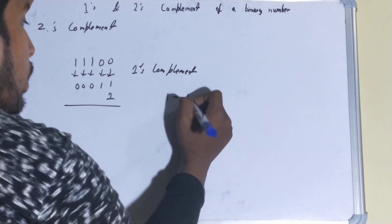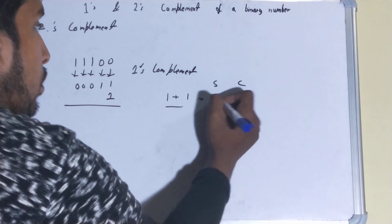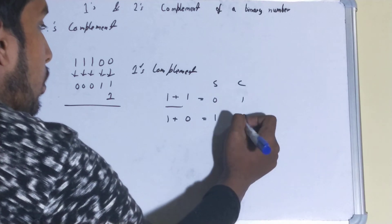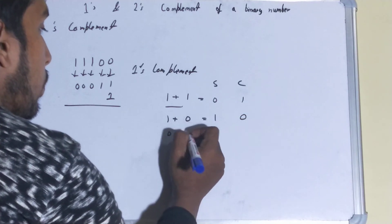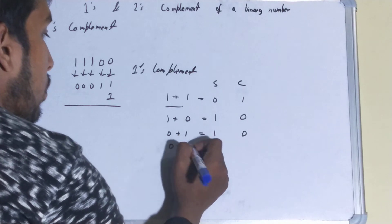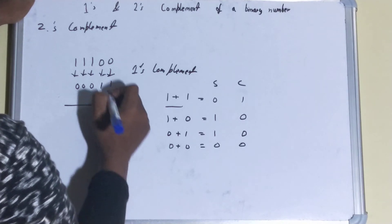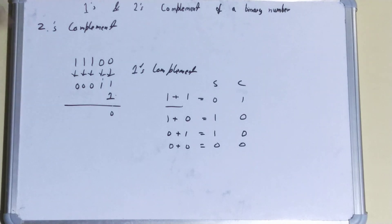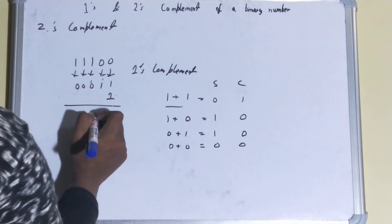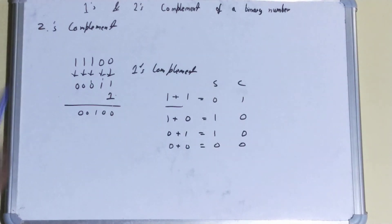One thing to keep in mind about binary addition: one plus one gives sum 0 and carry 1; one plus zero gives sum 1 and carry 0; zero plus one gives sum 1 and carry 0; zero plus zero gives sum 0 and carry 0. So adding 1 to the ones complement: here 1+1 gives 0 with carry 1, then again 1+1 gives 0 with carry 1, then we keep the remaining 1 and the zeros stay. That is your twos complement.